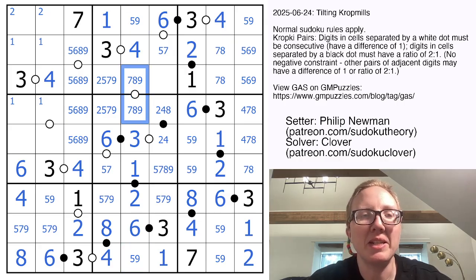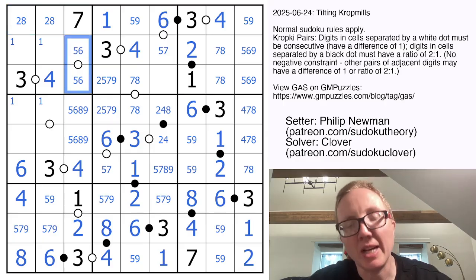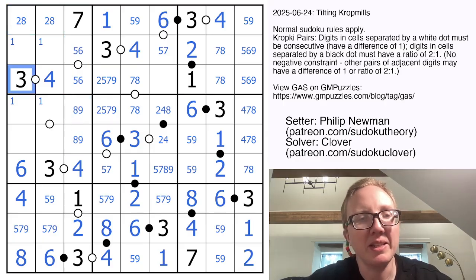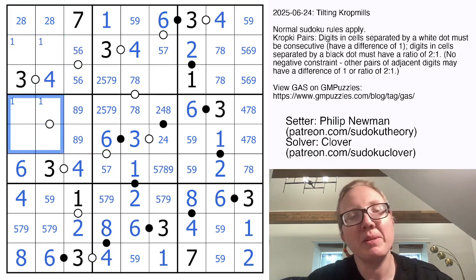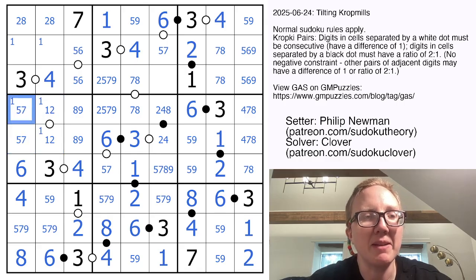So now I have a 5, 9 pair. In this row, this is now a 2, 8 pair, meaning there's no 8 here. So that's not an 8, 9 pair, it's a 5, 6 pair, making these two 8 and 9. My remaining digits in this region are 1, 2, 5, and 7. So my only consecutive pair is 1, 2, making this a 5, 7 pair. There's my 1, there's my 2.